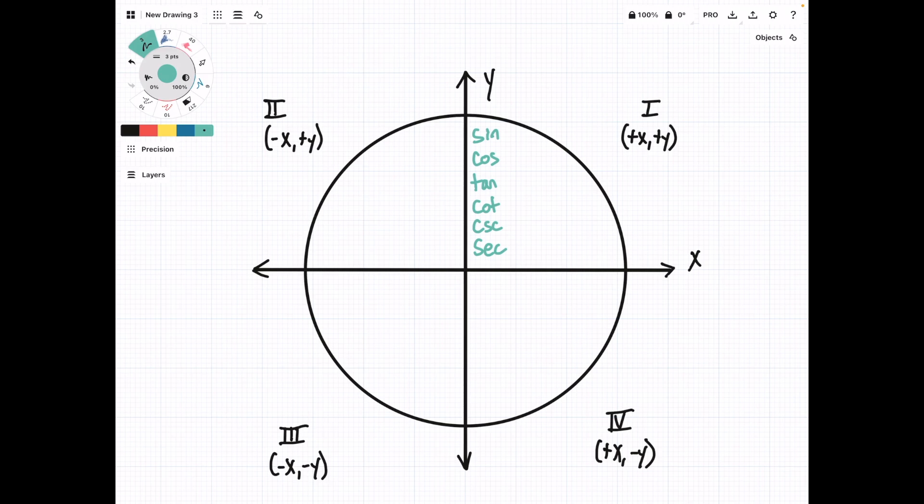But when we go over to quadrant 2, things are going to change. Sine is going to be positive, then we have a negative cosine, negative tangent, a negative cotangent, a positive cosecant, and a negative secant.